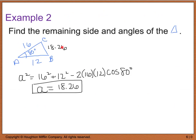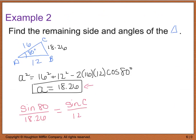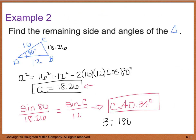Now that we have an angle and its opposing side, we use the law of sines. Sine of 80 degrees divided by 18.26 equals sine of C divided by 12, giving angle C equal to 40.34 degrees. Then angle B equals 180 minus 40.34 minus 80, which gives 59.6 degrees. We've now solved for the extra side and the other two angles.